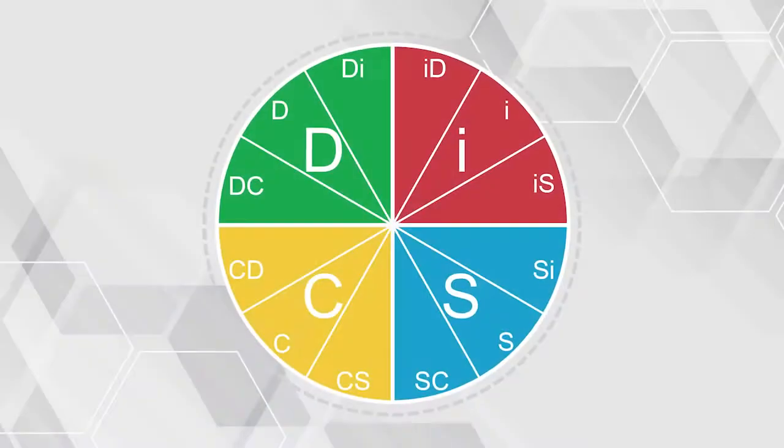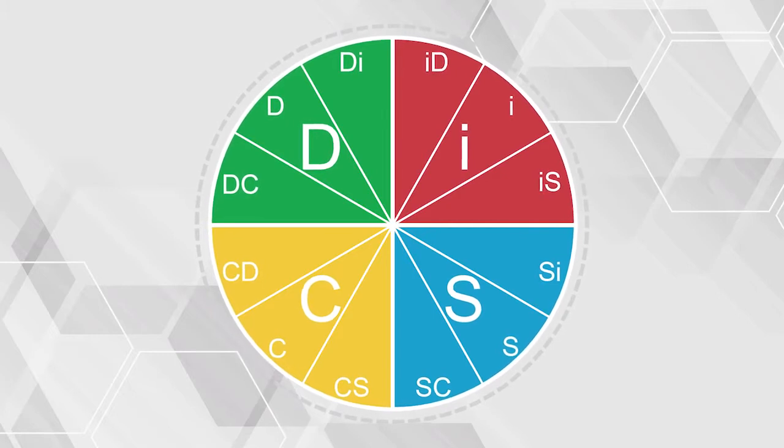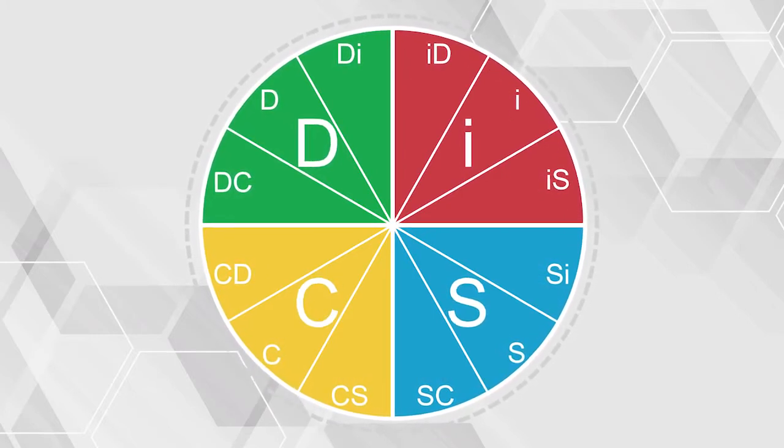So these are the four types: D, dominance; I, influence; S, steadiness; and C, conscientiousness. We all have all four types — it's not like you're just a D with no S, I, or C. Everyone has all four; some people sit in the middle. There might be a D-I, or an IS, or an SC, or a CD. It's fascinating and it's such a simple model — I'm sure just from my descriptions you've already thought, 'Oh yeah, that's this person, that's my mom, that's my dad.'